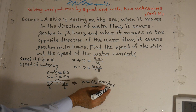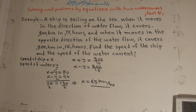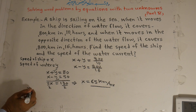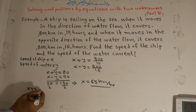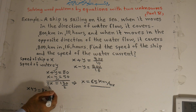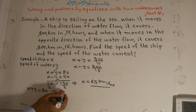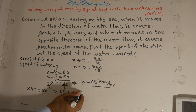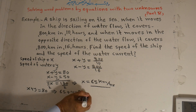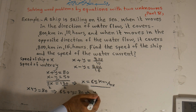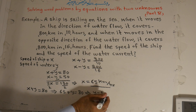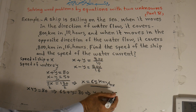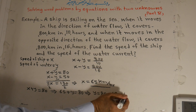This is the speed of the ship. Now we substitute x equals 65 into one of the equations — for example, x plus y equals 80. So instead of x, we put 65: 65 plus y is equal to 80. We carry the 65 to the right side, so y is equal to 80 minus 65.